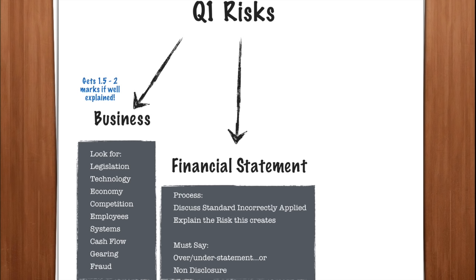This is all about identifying where things could have been done incorrectly in the financial statements, leading to a misstatement — but you must say what that misstatement is: either an over or understatement of a balance, or a non-disclosure. That is where the marks are. I cannot stress it enough. You'll get more marks for financial statement risks than business risks — two to two and a half if well explained — because they're more complex and more difficult to identify.